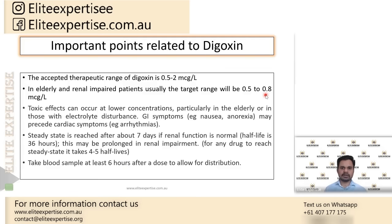When digoxin levels reach the toxic range — even if they go up to 1.2 — patients immediately start developing toxicity symptoms. The first symptoms are gastrointestinal: nausea, anorexia, and vomiting. These are the first signs of digoxin toxicity. Later, the patient will develop cardiac symptoms like cardiac arrhythmias.